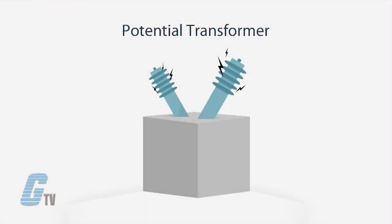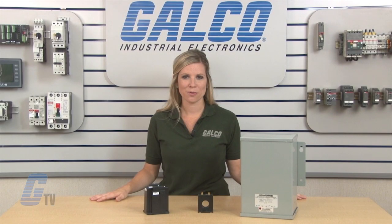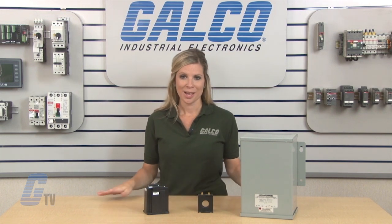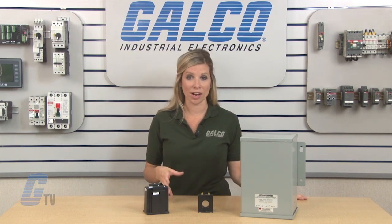A potential transformer is an extremely accurate step-down transformer, normally used with a standard 120 volt voltmeter. By multiplying the reading on the voltmeter by the ratio of transformation, the user can determine the voltage on the high side. In general, potential transformers are similar to a standard two-winding transformer except that it handles a very small amount of power. Transformers for this service are always the shell type because this construction has been proven to provide better accuracy.